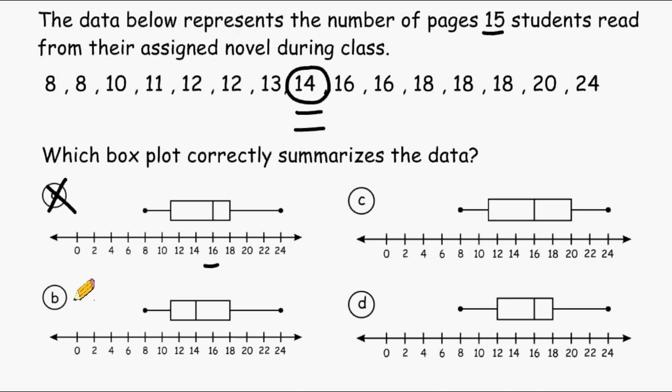If we take a look at choice B, its median is 14. Choice C has a median of 16, and choice D has a median of 16 as well. So we can eliminate choices C and D, leaving us only with choice B.